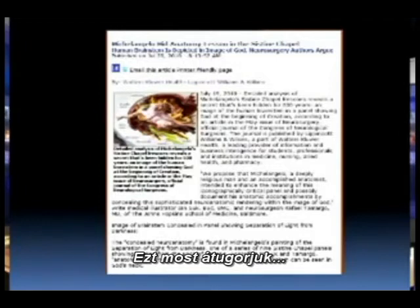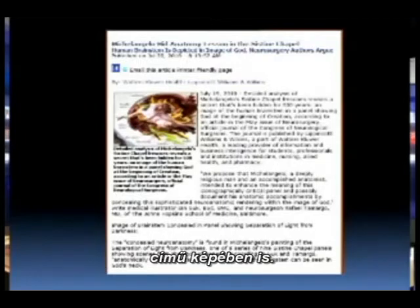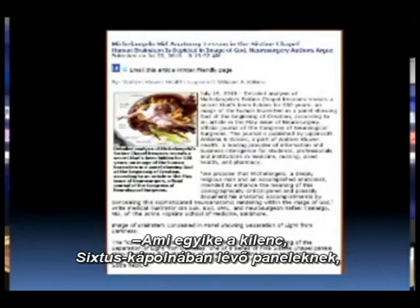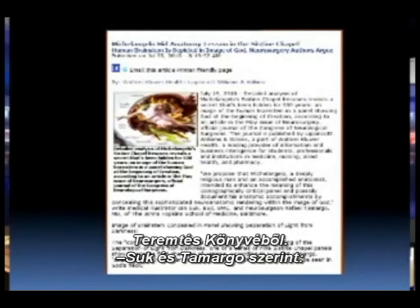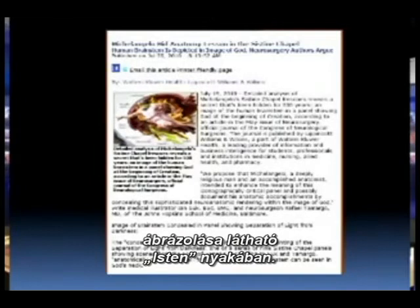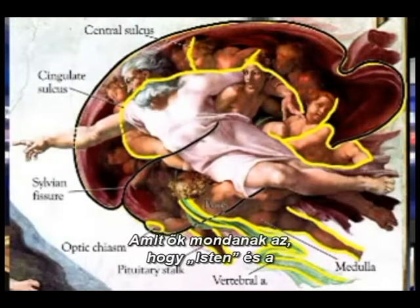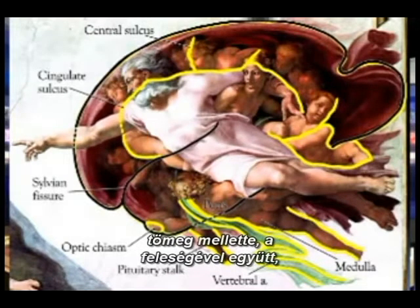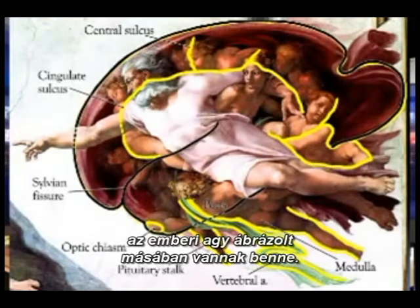The concealed neuroanatomy is found in Michelangelo's painting of the separation of light and darkness, one of the series of 9 Sistine Chapel panels showing scenes from the book of Genesis. According to Sulk and Tamargo, an anatomically correct ventral depiction of the brainstem can be seen in God's image. What they're saying is that God and all of this crowd that's with him, including his wife, are inside the depiction of the human brain.